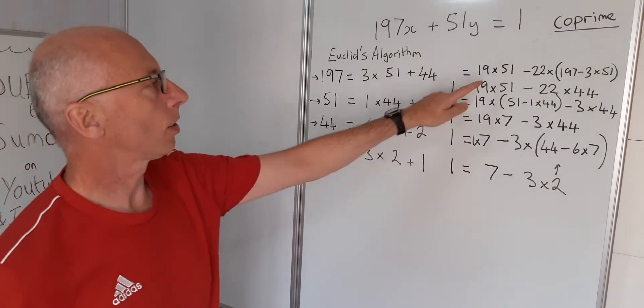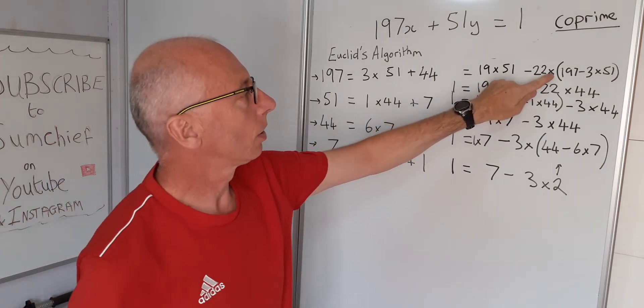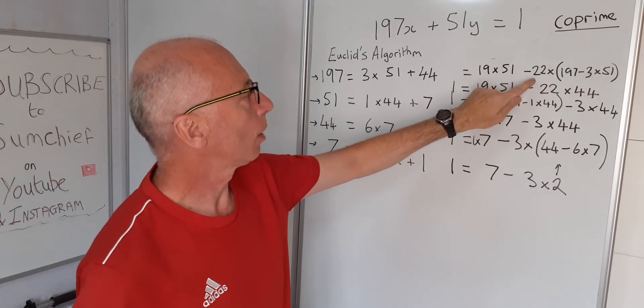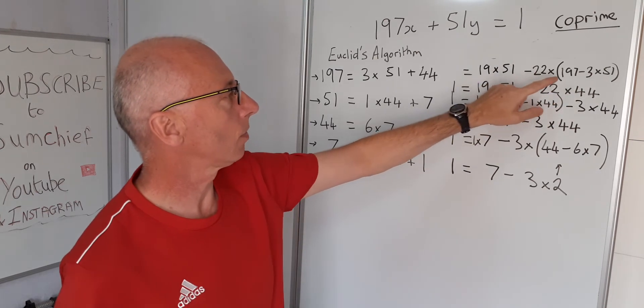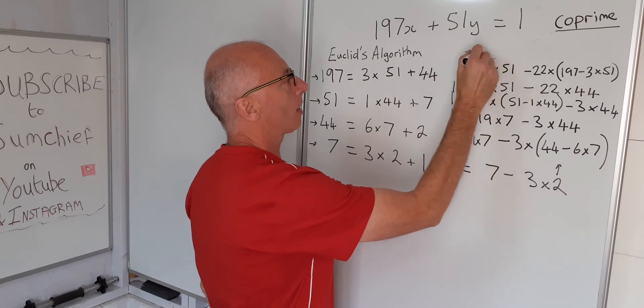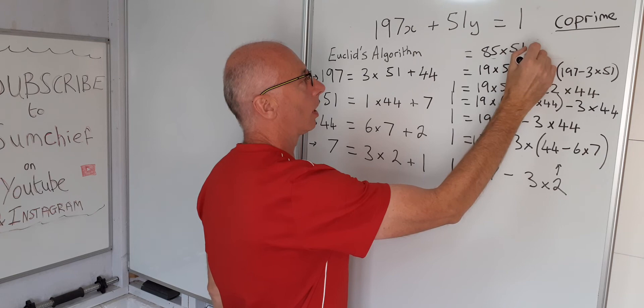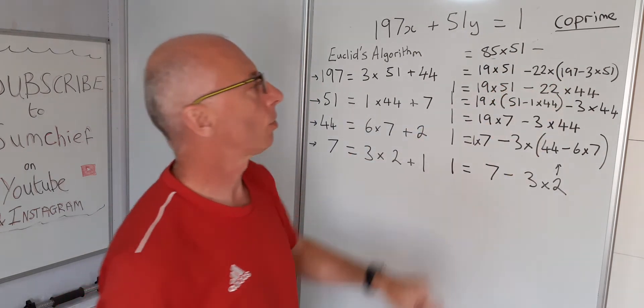Need to simplify this up a little bit. We've got minus 22 times minus 3 times 51. So minus 22 times minus 3 is 66, that's positive 66. Plus the 19 so that's going to give us 85 times 51. And we keep the minus sign, 22 times 197.